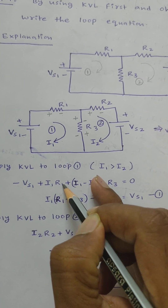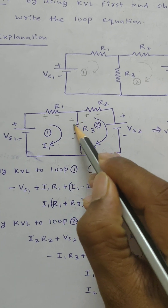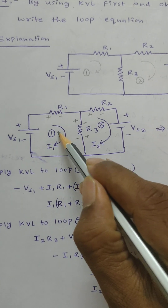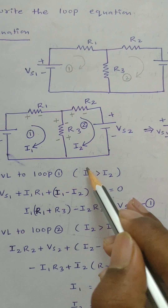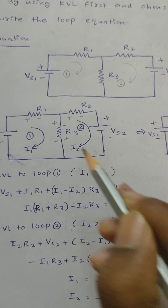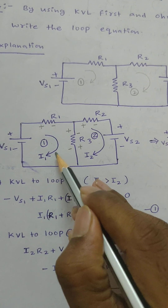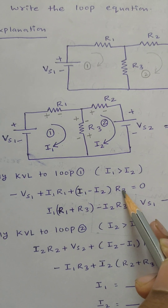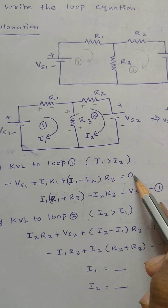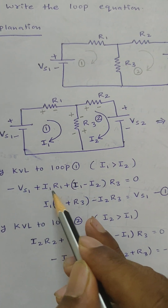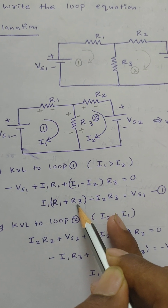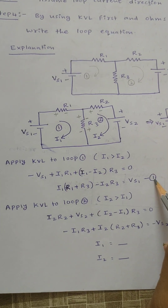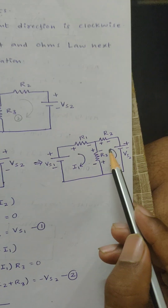The current flowing through R1 will be only i1, so the voltage is i1 into R1. Resistor R3 is connected between loop one and loop two. When we consider loop one, if loop one current magnitude is greater, the current flowing through R3 is i1 minus i2. So the equation becomes: i1·R1 plus (i1 minus i2)·R3 equals V_s1 — equation one.